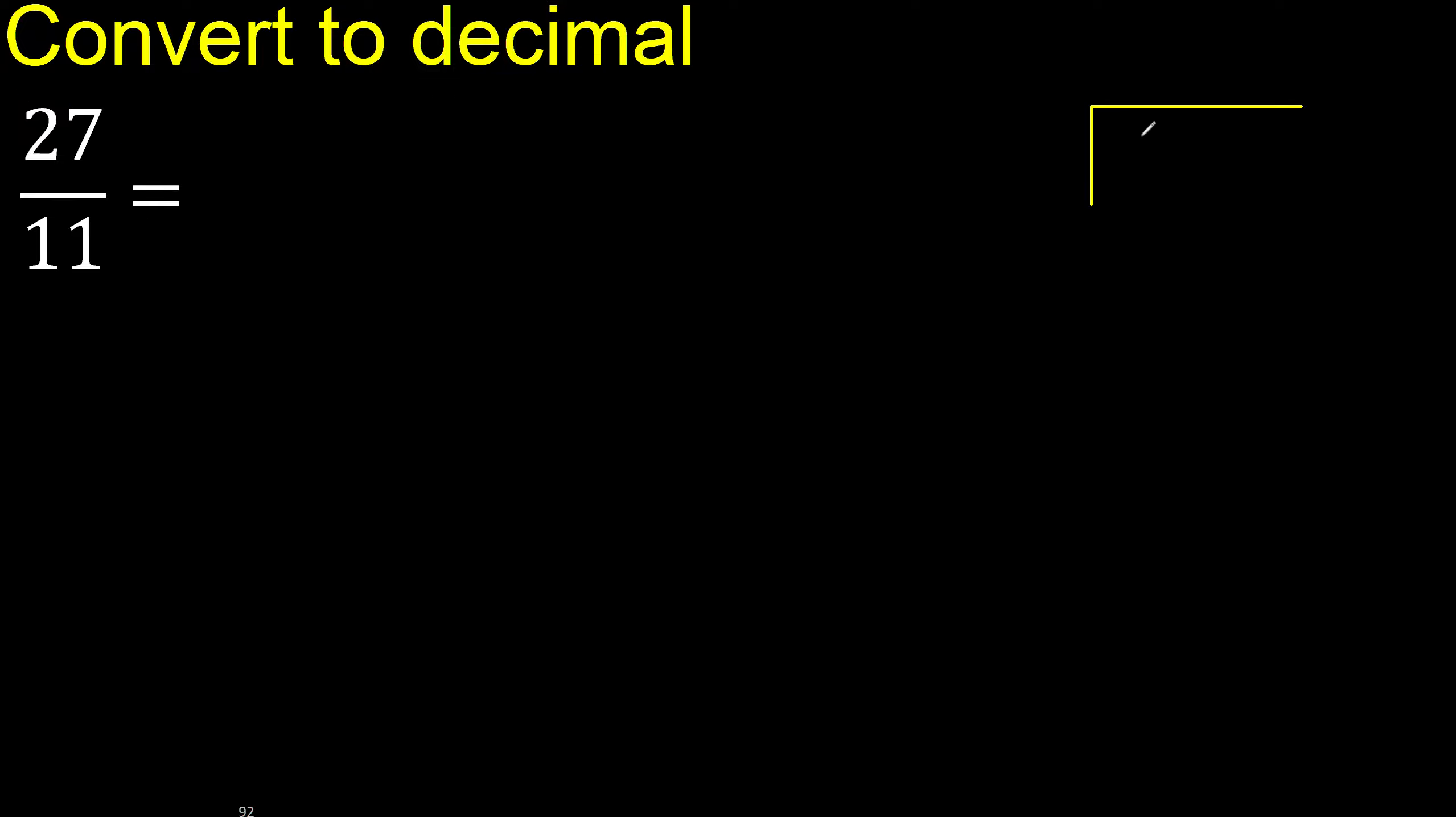27 divided by 11. Here 2 is less, therefore next 7. 27 is not less. Therefore with 27, 11 multiplied by which number is nearest to 27 but not greater?